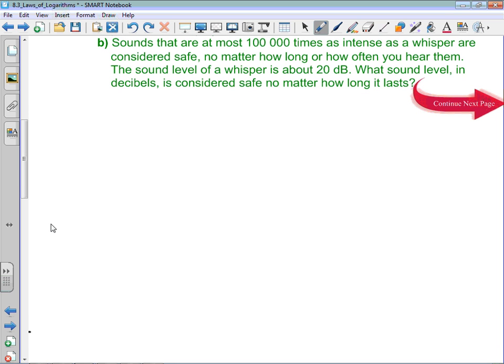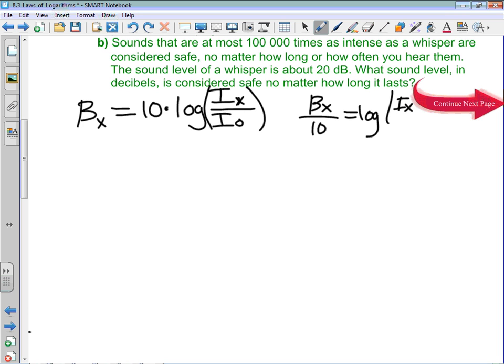The formula they give us is that the decibel reading of some sound X is equal to 10 times the log of the intensity of X over a baseline intensity I0. Think of I0 as the softest sound we could ever possibly hear, and IX is the actual intensity our eardrum is experiencing. It's just as useful to say BX over 10 equals the log of IX over I0.